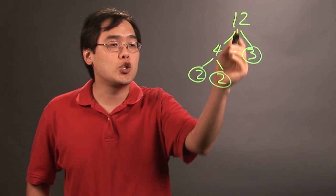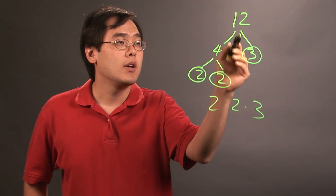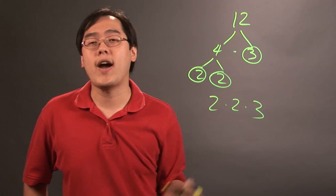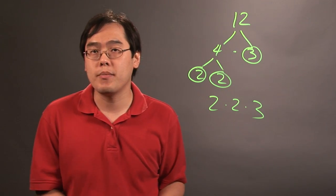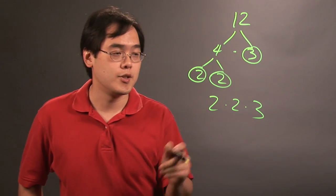Now that means 12 is broken up as 2 times 2 times 3. So any number, as long as you do what we call a factorization tree and break it up into primes, you're pretty much done and the problem is complete.